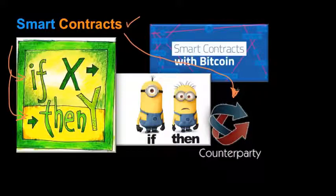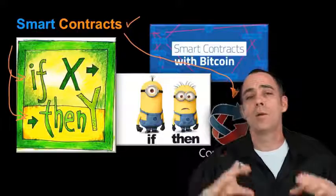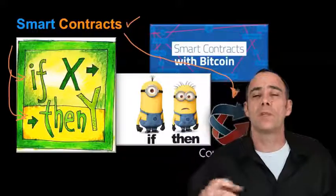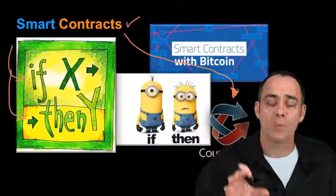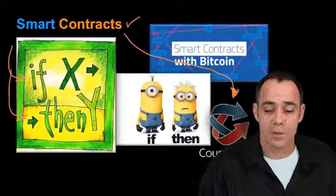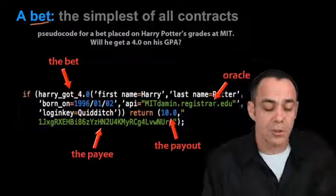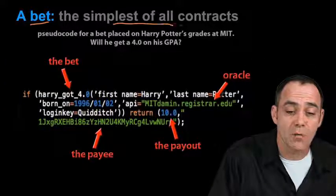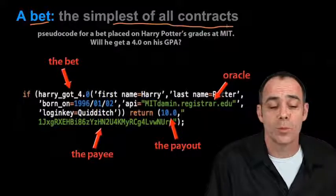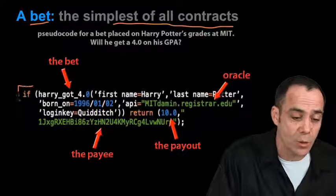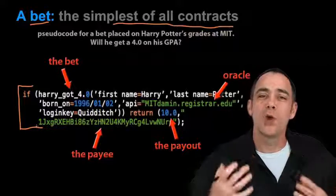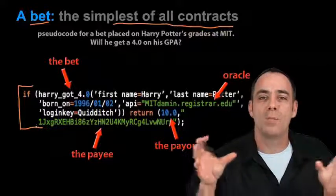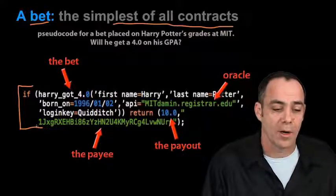A company named Counterparty builds this right on top of Bitcoin's blockchain. But there are other offerings — Ethereum and such — which provide their own blockchains allowing for smart contracts. To fully understand this, let's take a look at a bet, which is the simplest of all possible contracts. Right here we've got pseudocode — sort of fake code that I wrote to show how a smart contract might be implemented in software.